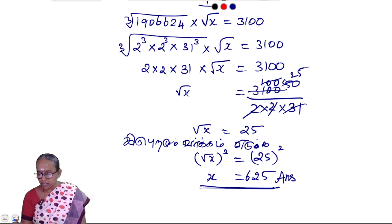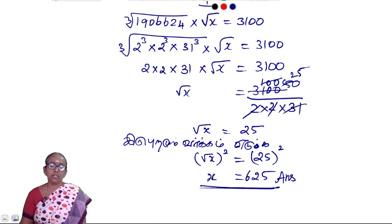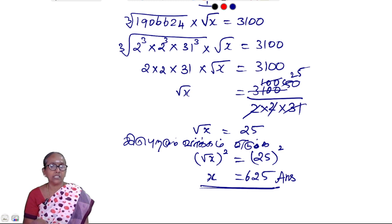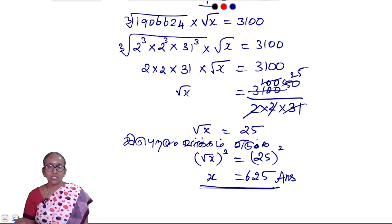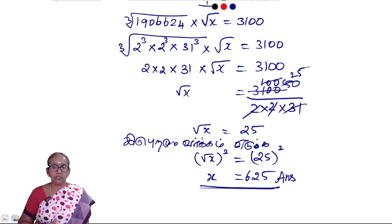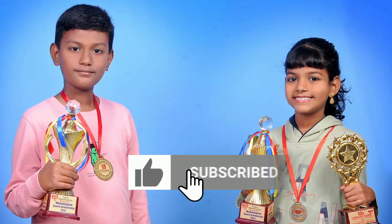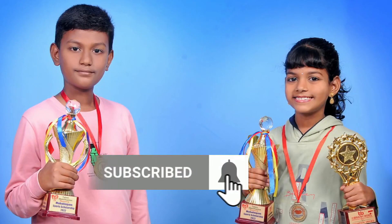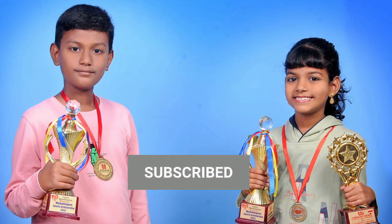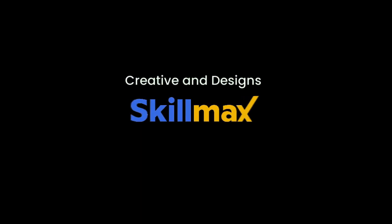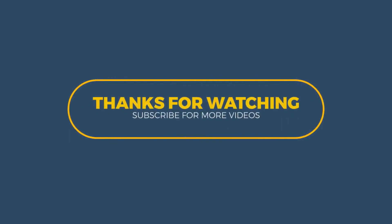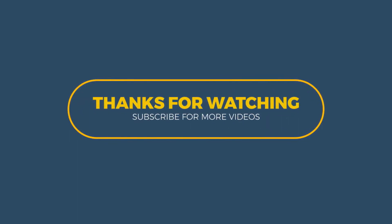Okay? So what do you think of x? I will do this. First, I will take the value. If I take x equal to 25, I will take the value of x to 625. Okay? That's good. So I will take the value of x. You must be careful.